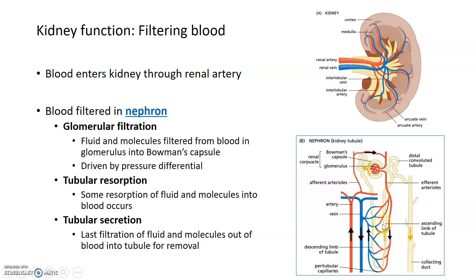The blood vessel running along the tubule can exchange fluids and molecules between the blood and the tubule — this is known as tubular resorption. Some of the fluid and molecules removed into the Bowman's capsule are actually resorbed back into the blood here. Then there's one last filtration step where fluid and molecules are moved back out of the blood into the collecting duct, then taken via the ureters to the bladder for removal. This entire process of glomerular filtration, resorption, and secretion happens about 60 times a day.